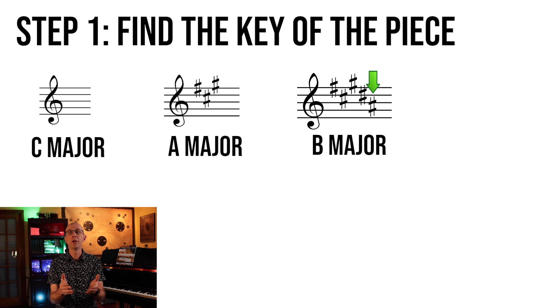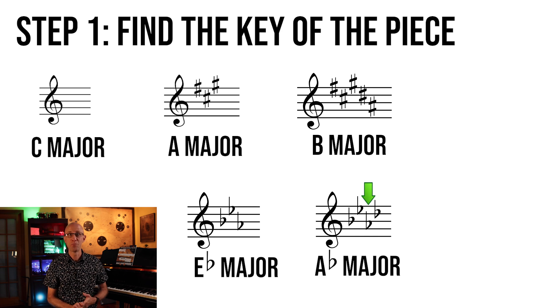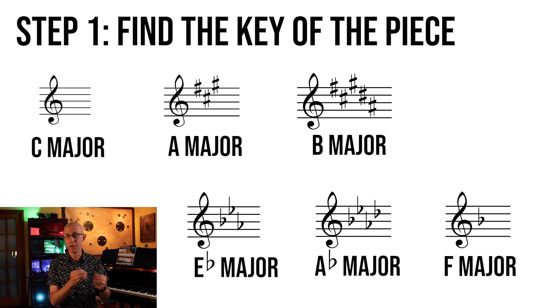If the key signature has flats, then the key is the second to last flat. So here, the second to last is an E flat. Then this is an E flat major. This one is an A flat major. If there's only one flat, then it's in the key of F major.